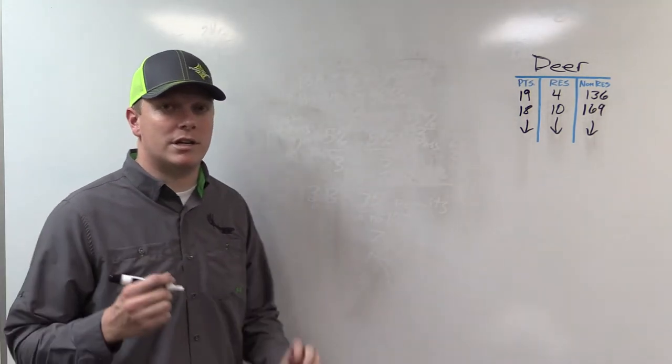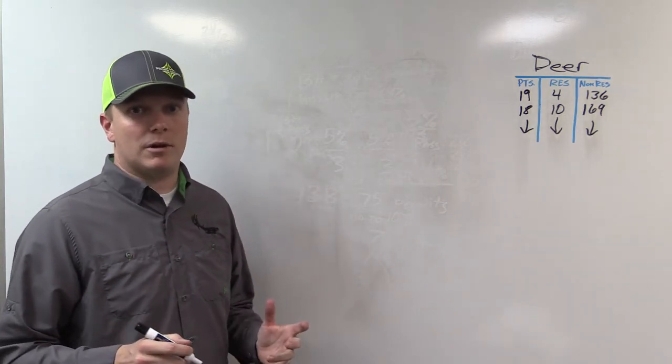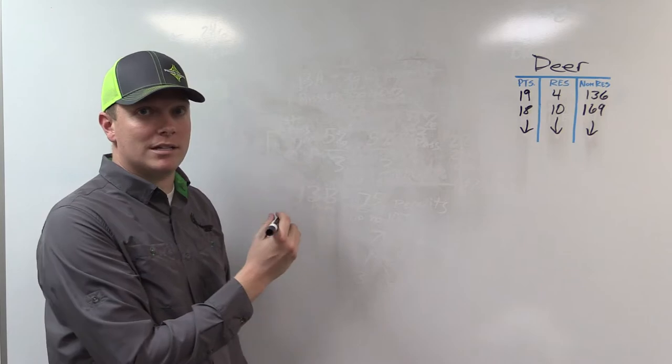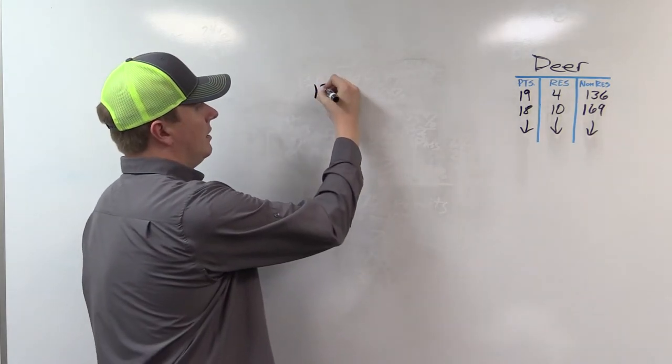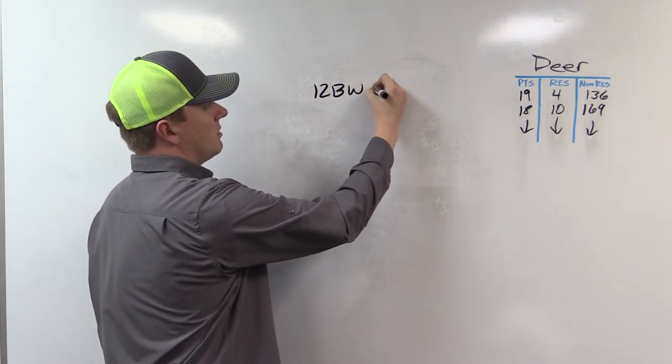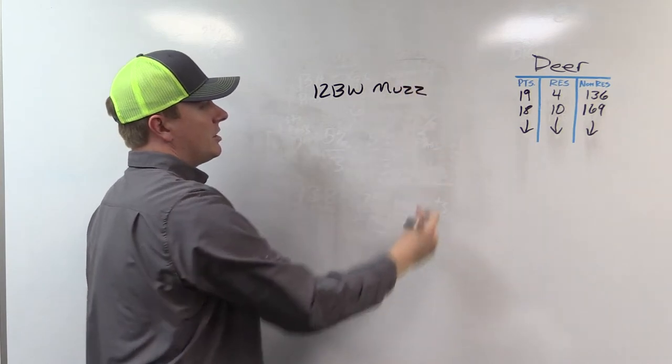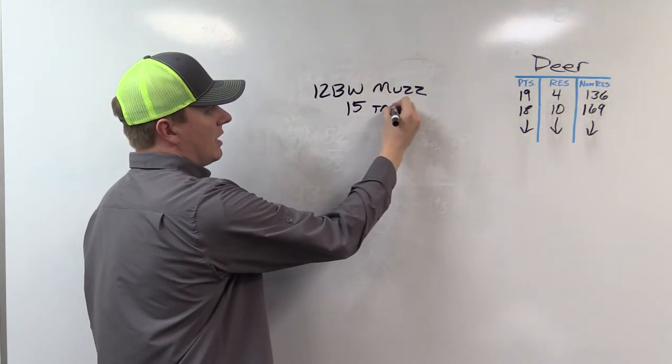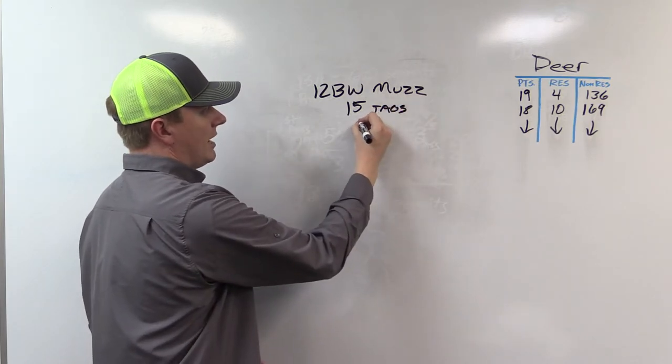Another thing to remember when you're choosing a deer unit or any of these other ones, if there's only one tag available to non-residents, so say 12B West muzzleloader this year, there's only 15 total tags.